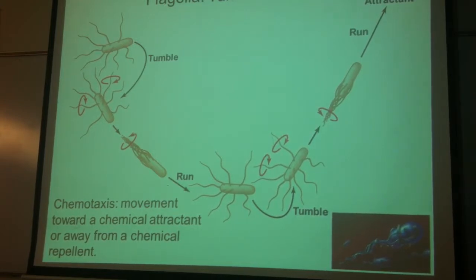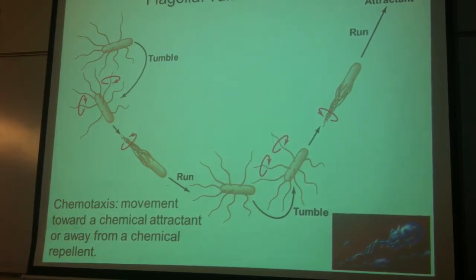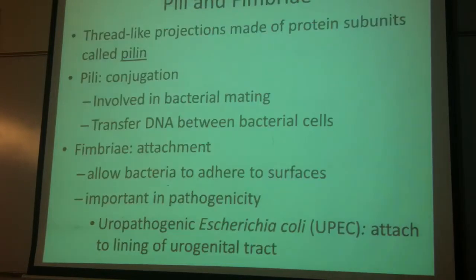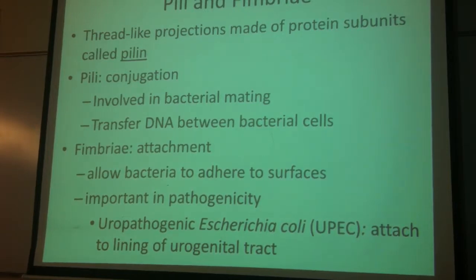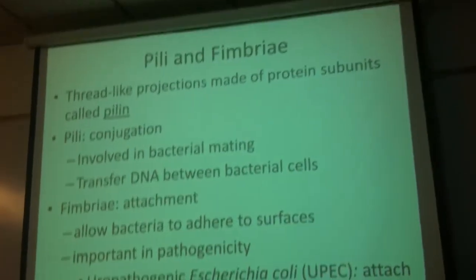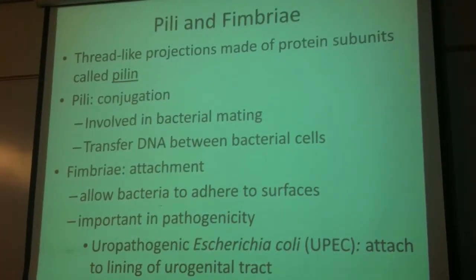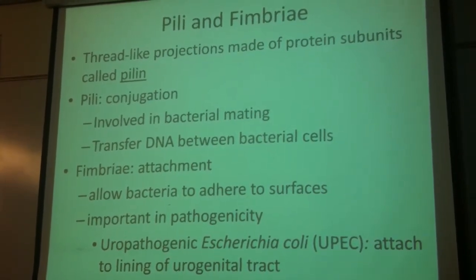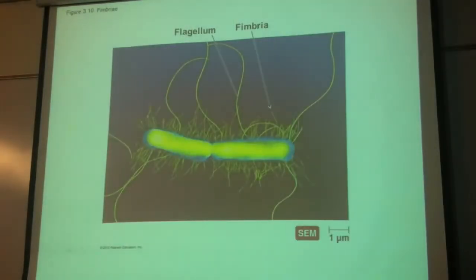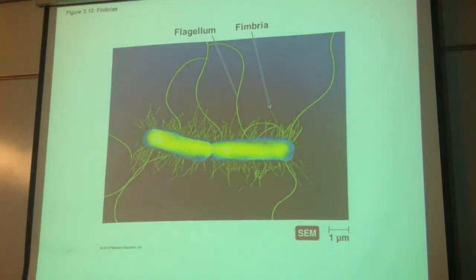So we have flagella. What are the two other extensions from cells? Cilia and pili. There's another one — fimbriae. Fimbriae are just for attachment, allowing the bacteria to adhere to surfaces. Pili are all about DNA transfer — that's how bacteria do their conjugation, how they transfer their plasmids. Remember, flagella are the largest, then fimbriae, and pili can be larger than fimbriae because they've got to reach the other bacteria.